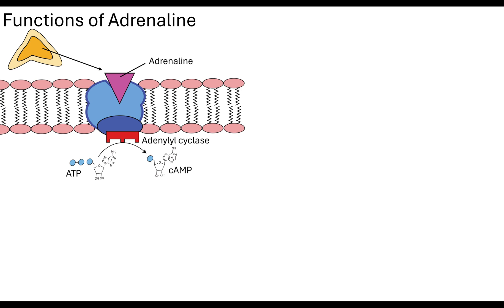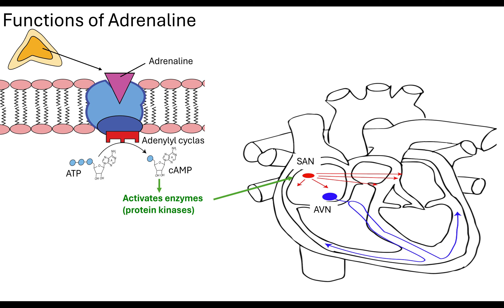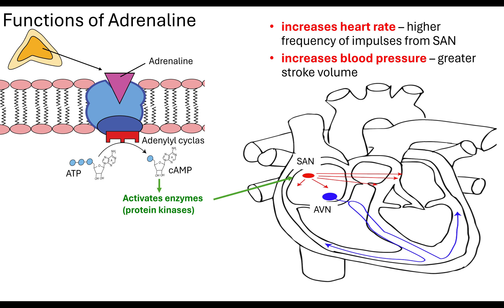That will therefore result in ATP being converted into cyclic AMP, which is going to activate enzymes, which are known as protein kinases. Now these protein kinases, what they're going to do is they are going to increase the impulses that are sent across the atria from the sinoatrial node. So we're going to increase that heart rate by having a higher frequency of impulses from the sinoatrial node. And we're also going to increase the blood pressure by having a greater stroke volume.